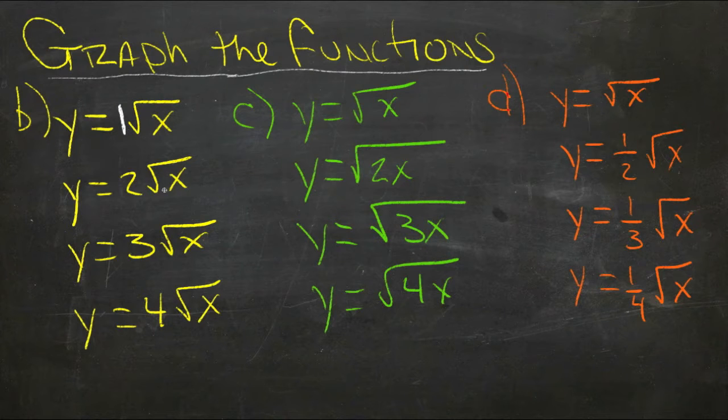y equals square root of x, y equals two square roots of x, three square roots of x, four square roots of x. Example c asks you to put those same numbers inside the root and then graph it, so square root of one x, square root of two x, and so forth.